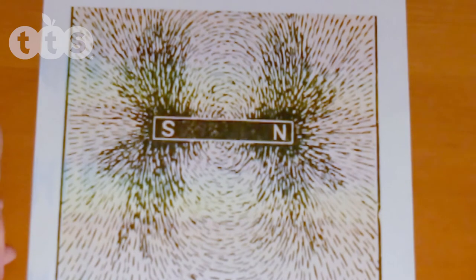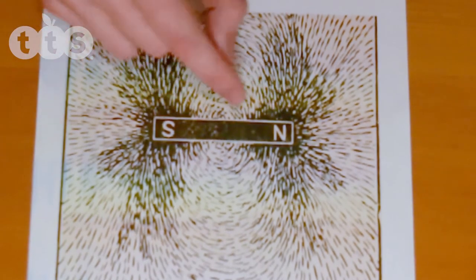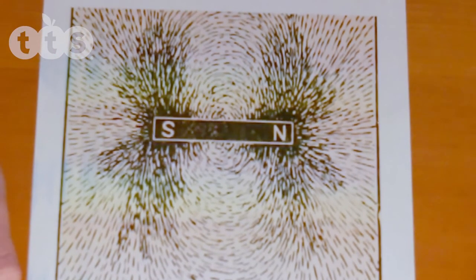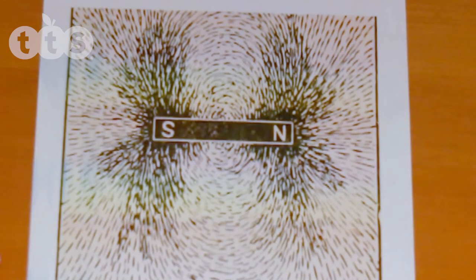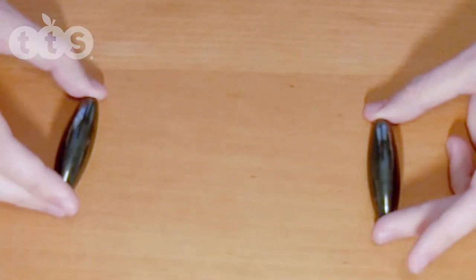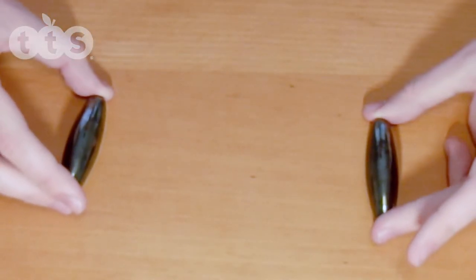Around the magnet are iron filings showing the magnetic field lines associated with it. So the magnet doesn't actually need to touch the magnetic materials to interact with them. Just like gravity it can act at a distance. As we can see these magnets attract each other at a distance.